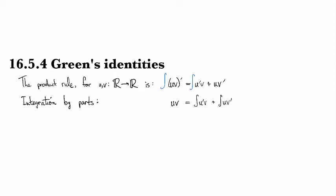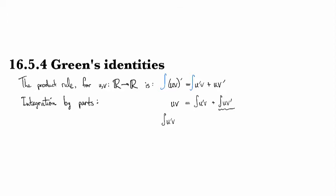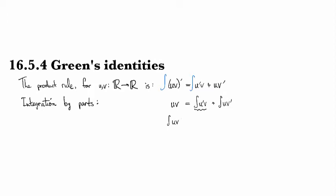And then the common form is to subtract this guy over to the other side. So it looks like integral of u v prime is equal to uv minus integral v u prime.